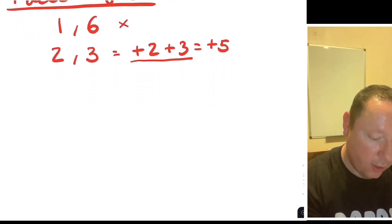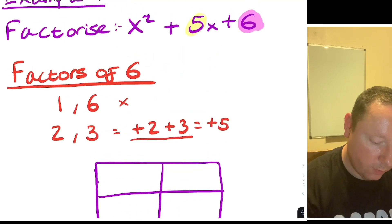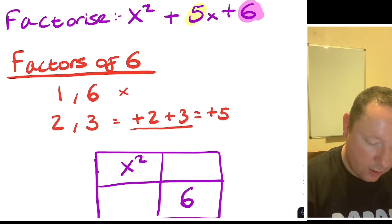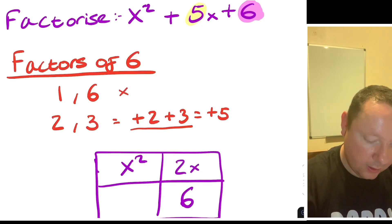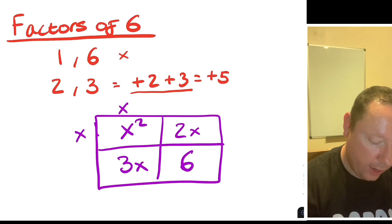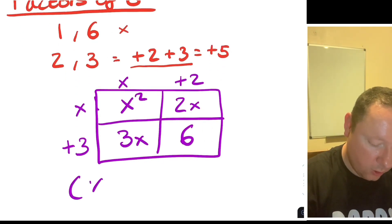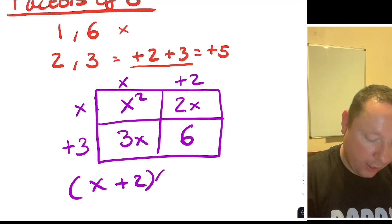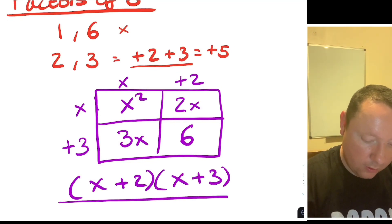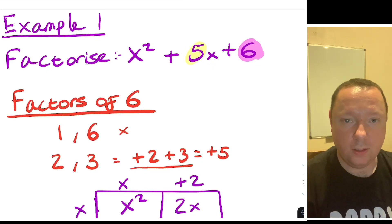Going back to the rectangle: x squared and 6 are in place, and the 5x is split into 2x and 3x. So x times x is x squared, x times 2 is 2x, x times 3 is 3x. The fully factorised form is x plus 2 — the top line — and x plus 3. It will always be a double bracket for a trinomial, which has three terms: x squared, just x, and a number.